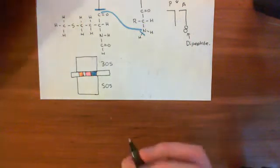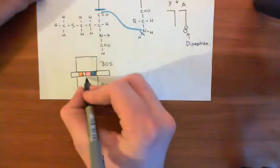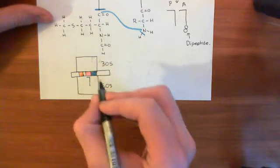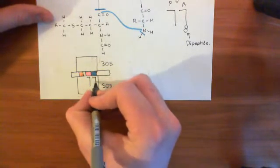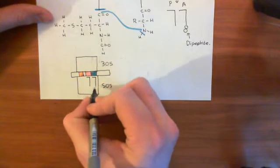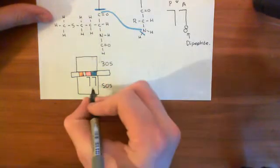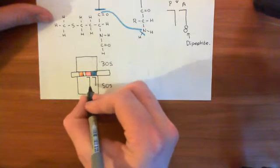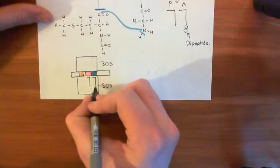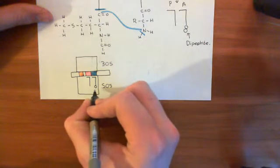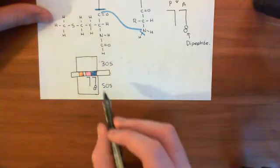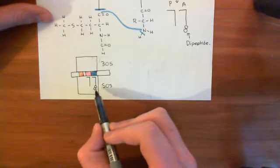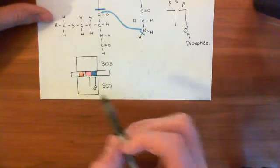Now, we initially had a formylmethionine tRNA bound to this start codon. But now, when the second aminoacyl tRNA came in, that formylmethionine amino acid on this first tRNA was transferred onto the amino acid on the second aminoacyl tRNA. So you've now got this second tRNA bound to two amino acids with a dipeptide.